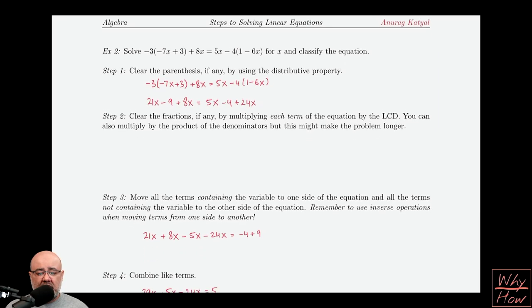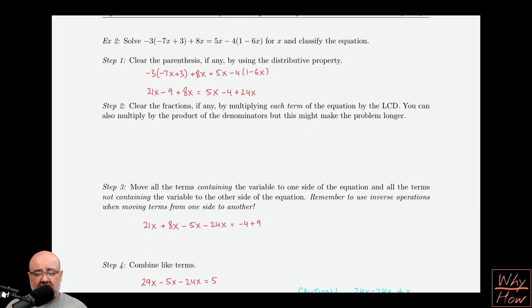Now we can simply combine like terms because we have all the x terms together and all the non-x terms together. On the left hand side, to avoid mistakes we do two at a time. 21x plus 8x is going to give us 29x minus the 5x minus the 24x. On the right hand side, negative 4 plus 9 is going to give us 5.